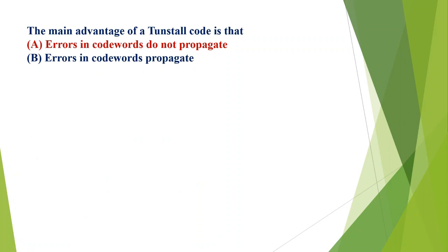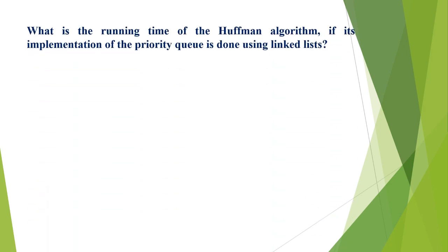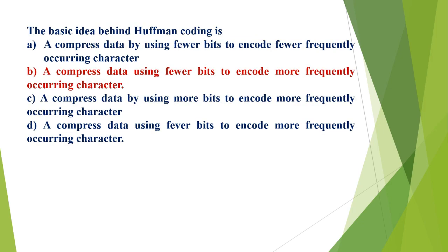The main advantage of an instantaneous code is that: A) errors in a codeword don't propagate, B) errors in a codeword propagate, C) the disparity between frequency, D) none of these. The correct option is A, errors in a codeword don't propagate. What is the running time of the Huffman algorithm if the priority queue is implemented using a linked list? A) O(C), B) O(log C), C) O(C log C), D) O(C^2). The correct option is D, O(C^2).